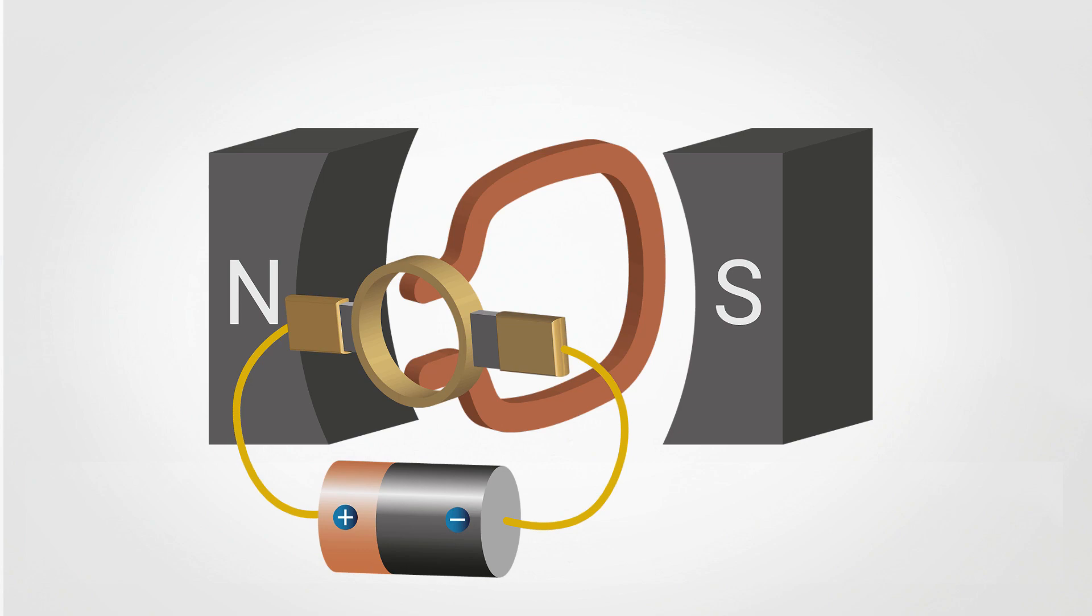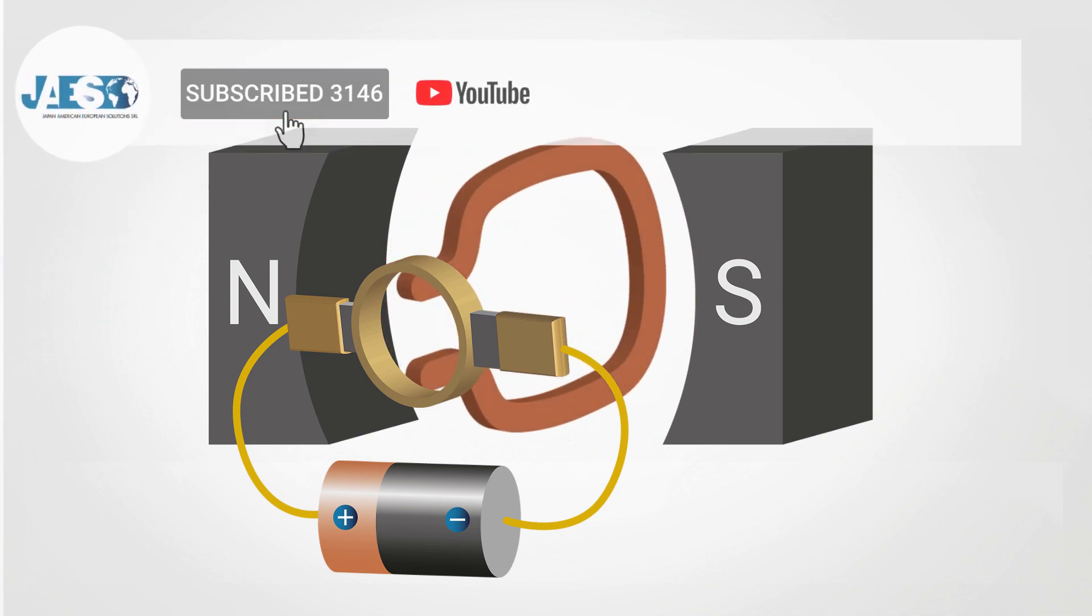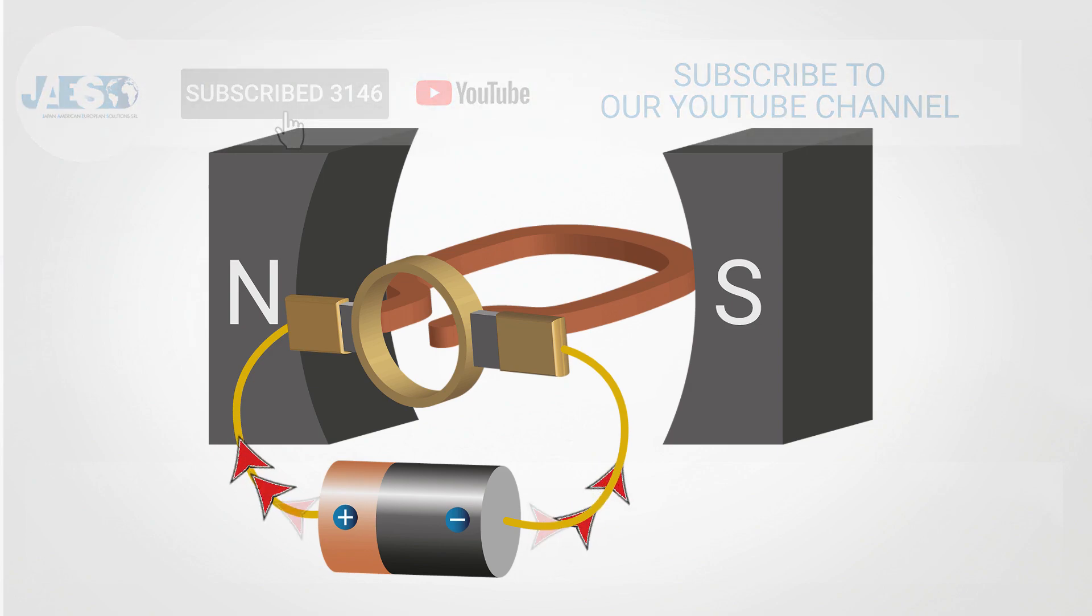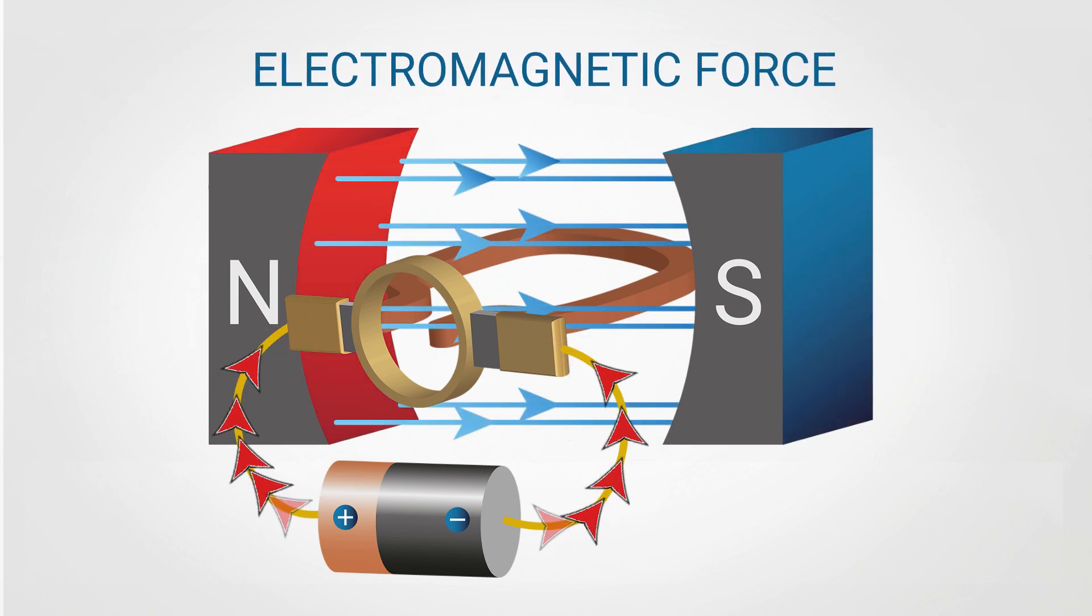Here again, the Lorentz force is responsible for the rotation of the copper coil. In fact, when the electricity flows through the coil, an electromagnetic force acts on it.